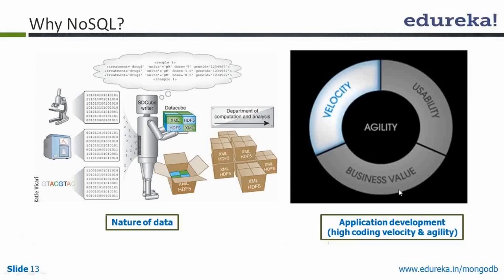Another reason is application development methodology. People use different methodologies like agile. In terms of code velocity and implementation, people want to perform all activities at the same time. With traditional systems it was difficult because you had to design the database first, then write your application accordingly. But with NoSQL you can perform on-the-fly activity — you can start pushing your code directly to the database without knowing the structure, because NoSQL has a flexible or no schema.